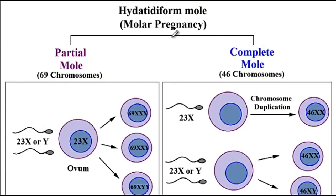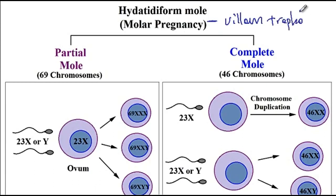Hydatidiform mole, the other name for which is molar pregnancy, is a condition that is characterized by the proliferation of the villus trophoblasts. This condition arises due to the abnormal fertilization of the sperms and eggs.